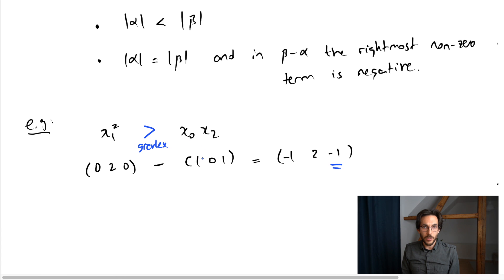On the other hand, if you were to look at it from the GLEX ordering, then it says the first term is negative. Therefore, the ordering should be the other way around. It says that the rightmost term is greater than the left term.